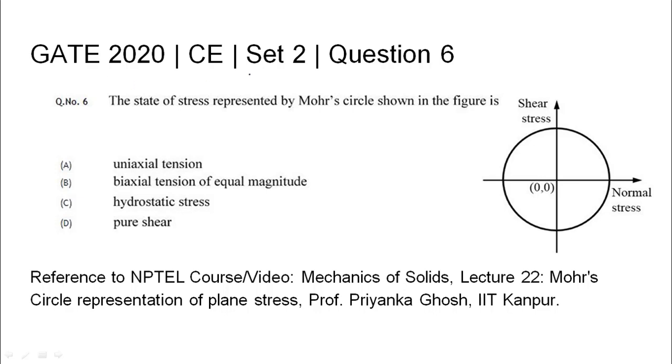GATE 2020 civil engineering set 2, question 6. The state of stress represented by Mohr's circle shown in the figure. Four options are given: uniaxial tension, biaxial tension of equal magnitude, hydrostatic stress, and pure shear. Reference to the NPTEL course which is relevant for this question has been cited.